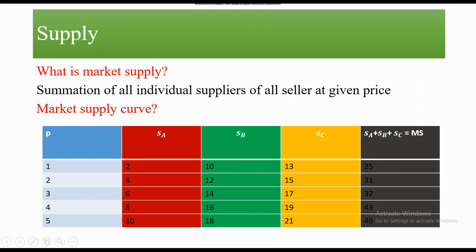Market supply is related to the summation of individual suppliers. Just as market demand is collected from all individuals' demand, the same concept applies to market supply. When we collect all individual suppliers and sum them at a given price, it becomes market supply — the sum of all individual suppliers of sellers at a given price.